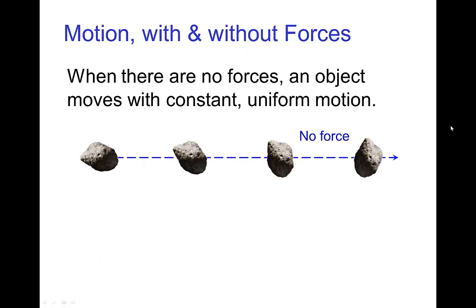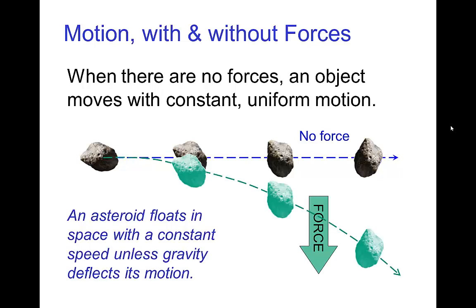We start with a situation where there are no forces. If we have something like an asteroid drifting through space, away from any gravitational force, then the motion is very simple. The asteroid will float with constant uniform motion — moving in a straight line at a constant speed. Now, if there is a force acting on the asteroid, like a gravitational pull, then the motion is no longer constant uniform motion. Instead, we'll have possibly slowing out or slowing in, and the path of action could change from a straight line to a curve.